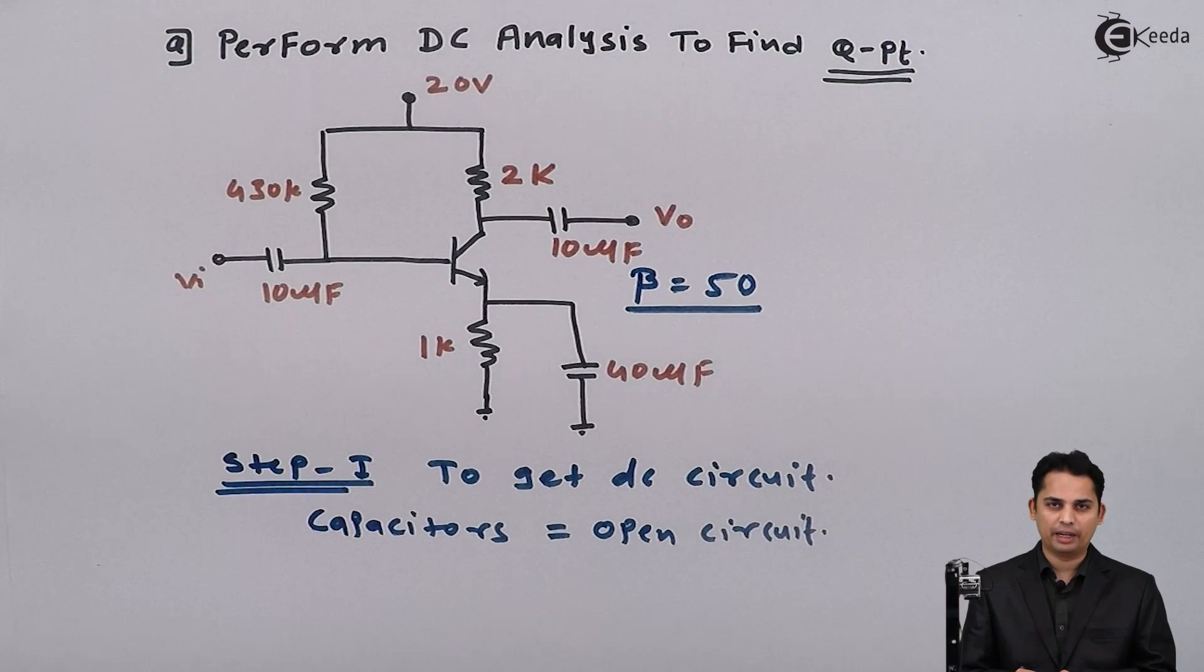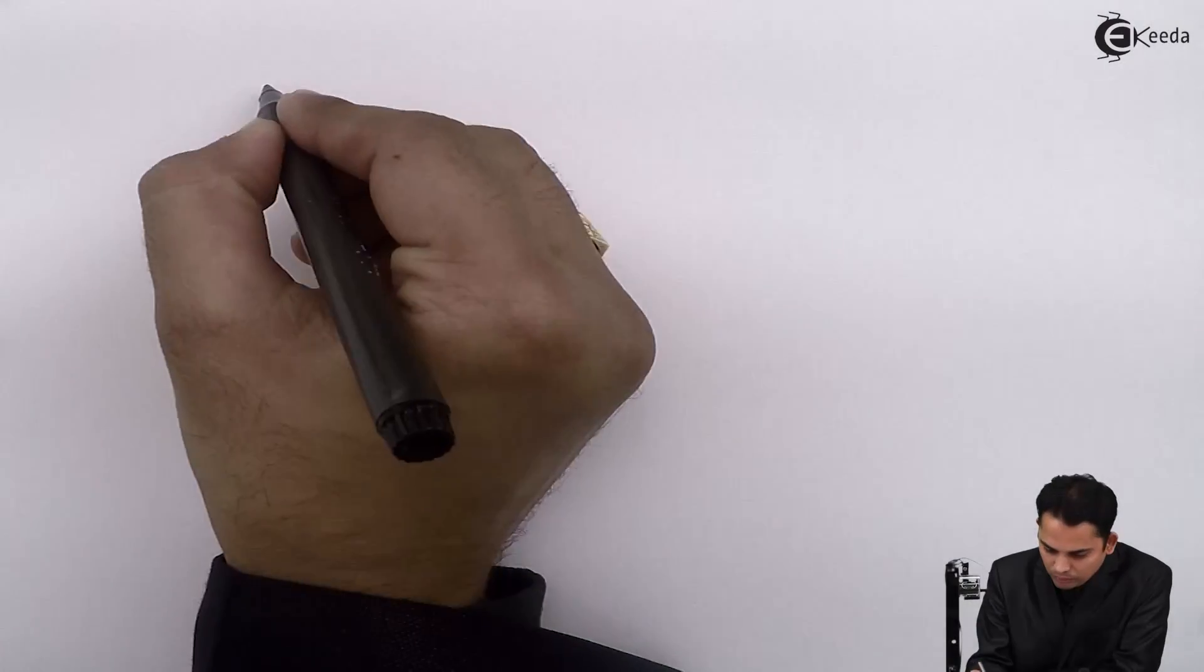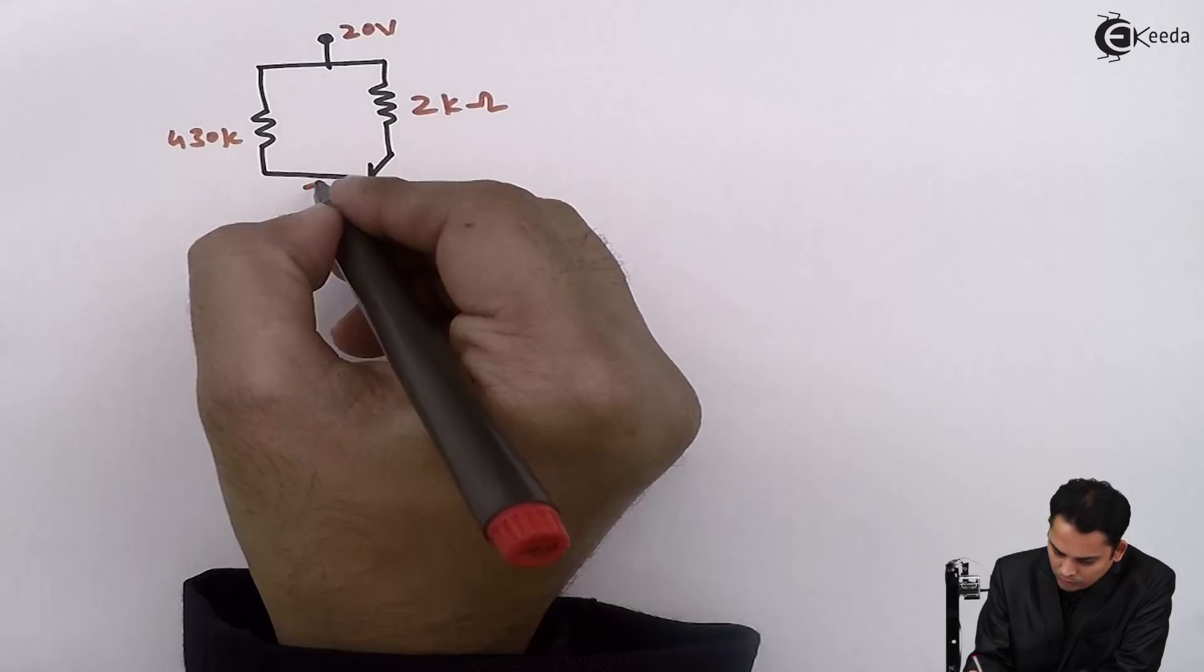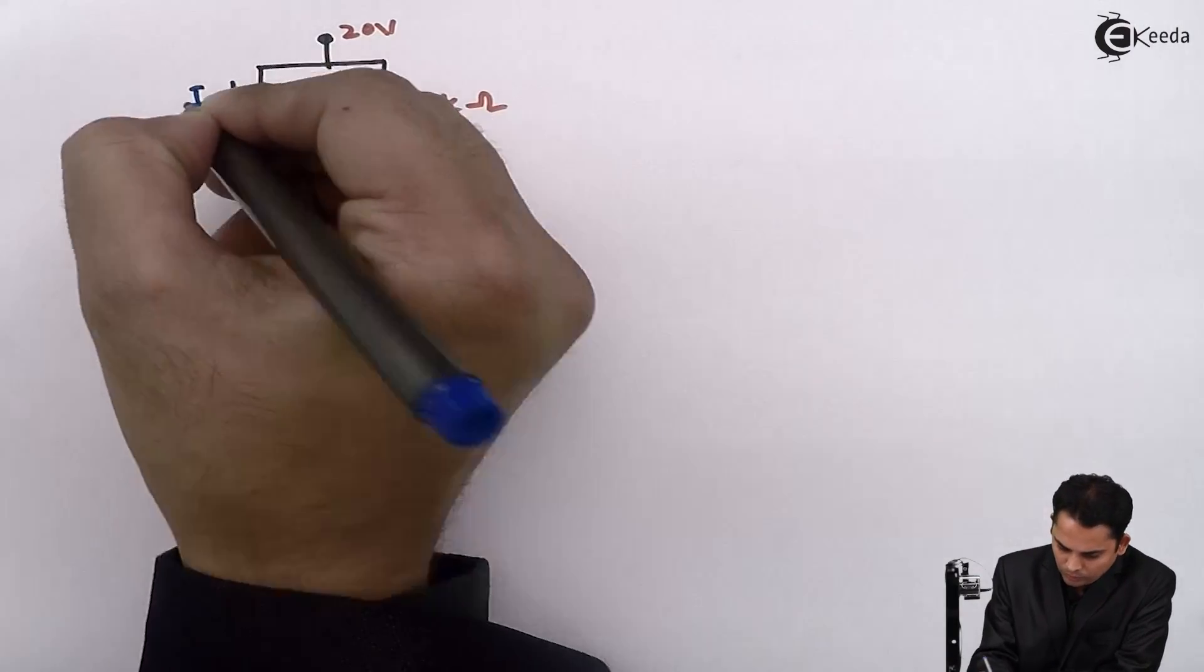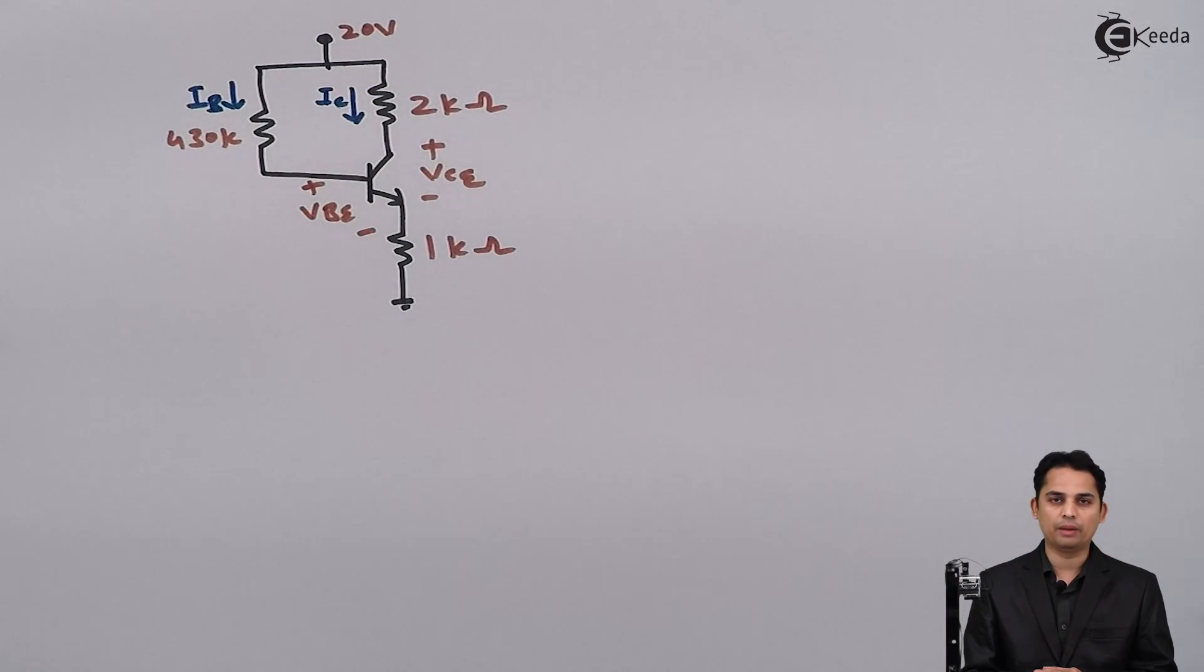Hence we will get circuit diagram as follows. Now in this circuit diagram we have already marked the voltage between base to emitter and voltage between collector to emitter. Similarly we have also marked base current and the collector current as shown in the figure. In step 2 we are going to find out base current IB.